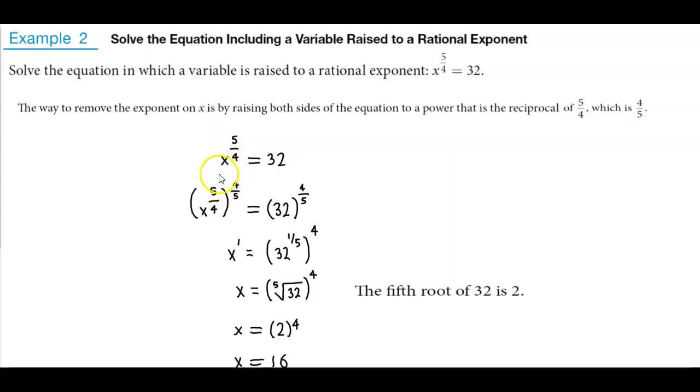Now our goal is that we want to solve for x, meaning we want to get x to the first power. So the way to remove the exponent on x is by raising both sides of the equation to a power that is the reciprocal of 5 fourths, which is 4 over 5.